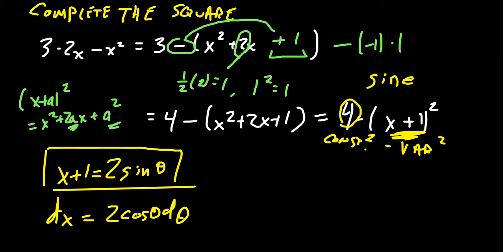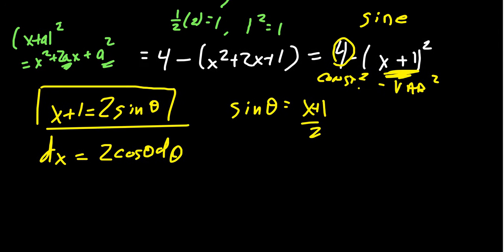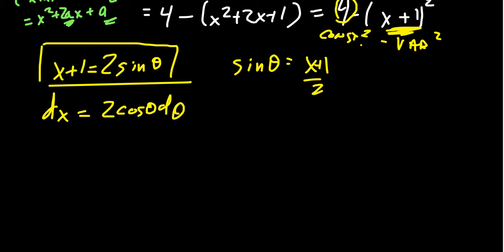If we start solving for theta, notice that sine theta is going to equal x plus 1 over 2. And using this observation, we can construct our right triangle. Let me draw that real quick. We get our right triangle. Associate to the angle theta here. Sine has the ratio of opposite over hypotenuse, x plus 1 over 2. And then we need to identify the other side of this equation.